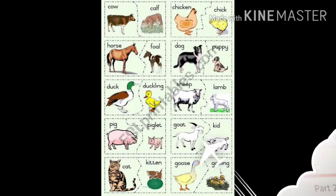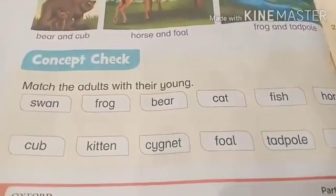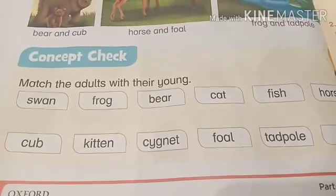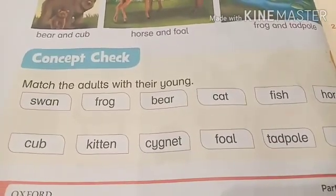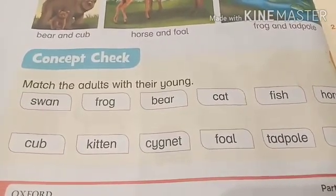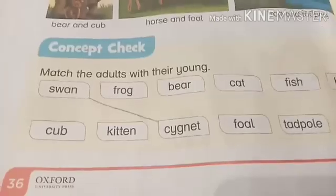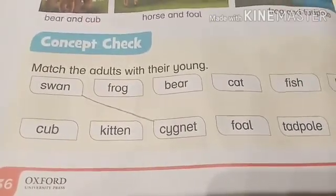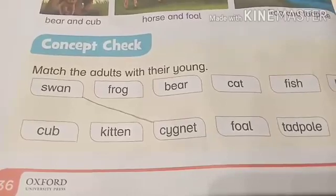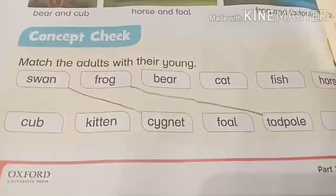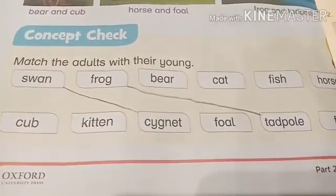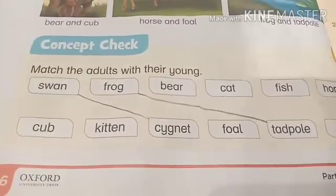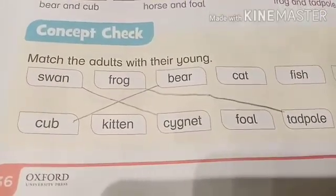Now concept check — match the adults with their young. Swan baby name is cygnet. Frog baby name is tadpole — match frog with tadpole. Bear baby is cub. Cat baby is kitten. Do you like cute kittens?